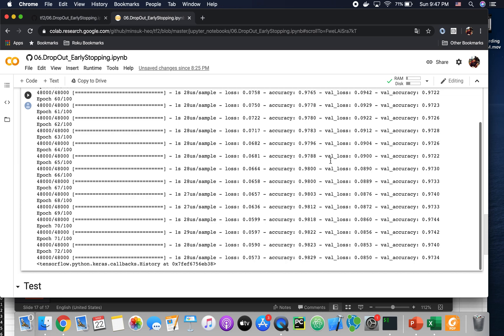Since patience is 3 here, if you go down here, then the 9733, 9744, so it improved. But if you see here, 9742 doesn't improve.